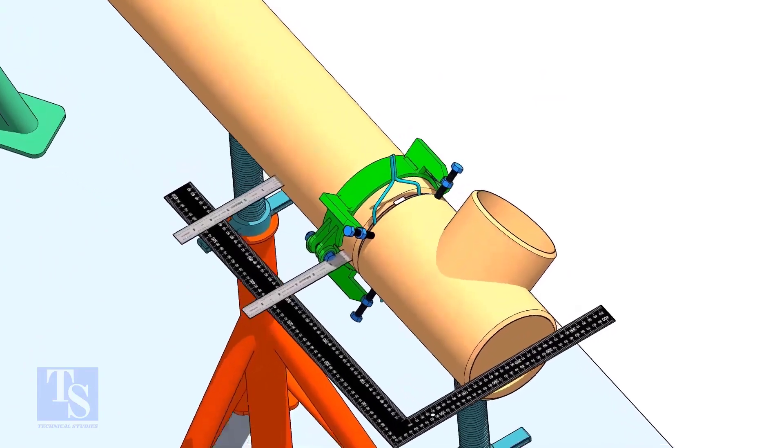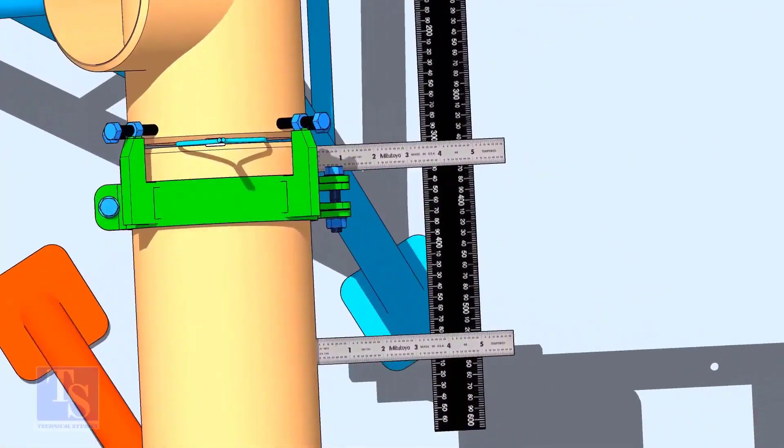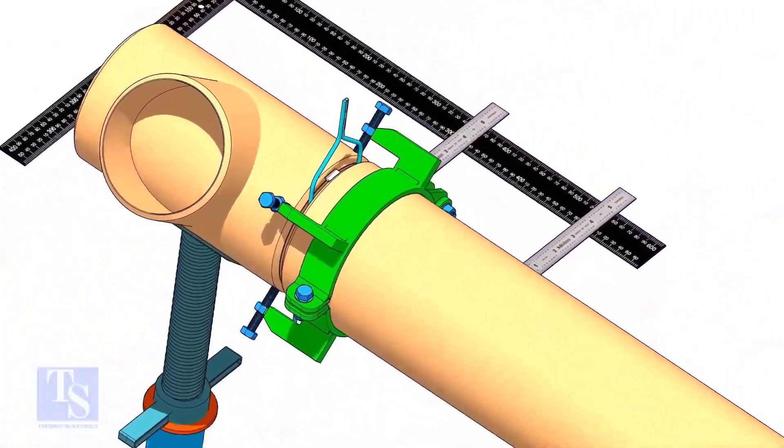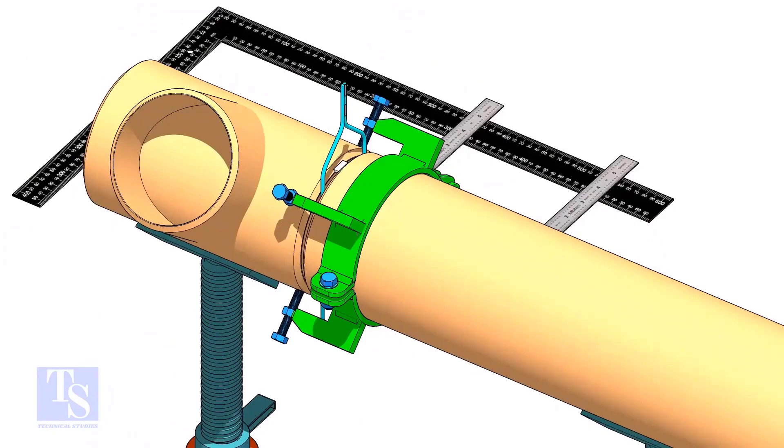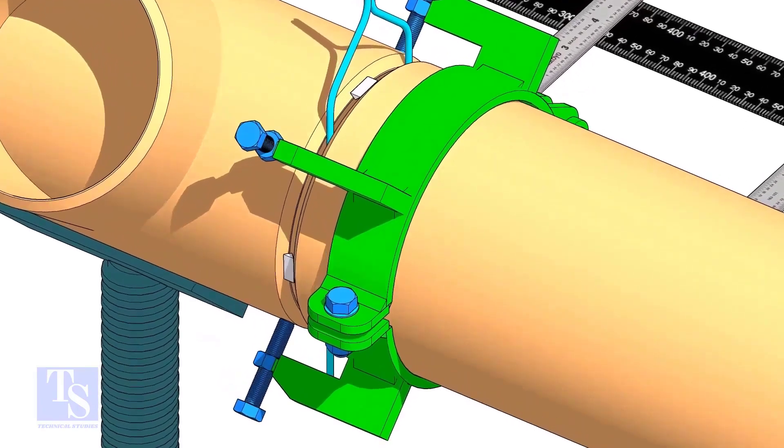Level the side of the T with the pipe, as shown. Now, tack weld on both sides of the joint.